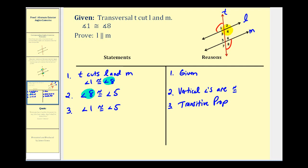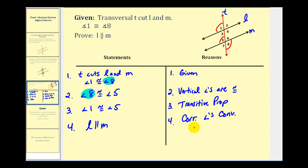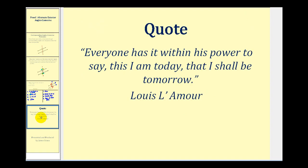If angle one is congruent to angle five, then angle one and angle five are corresponding angles, and therefore line L is parallel to line M. This is by the corresponding angles converse postulate. And we have our proof. I hope this was helpful.